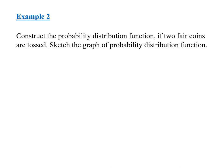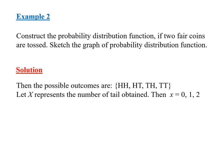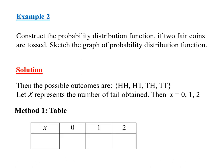Example 2: Construct the probability distribution function. If 2 fair coins are tossed, sketch the graph of the probability distribution function. For the solution, x will represent the number of tails, so x will be 0, 1, or 2. We represent our answer in the form of a table: x = 0, 1, 2 with probabilities 1/4, 1/2, and 1/4.